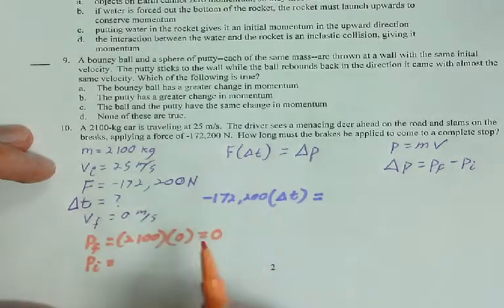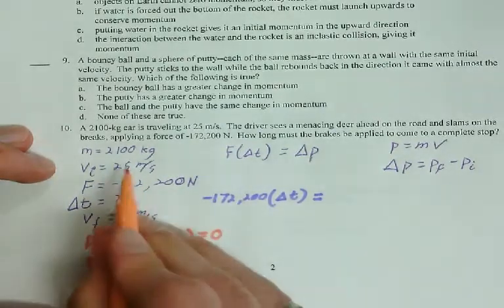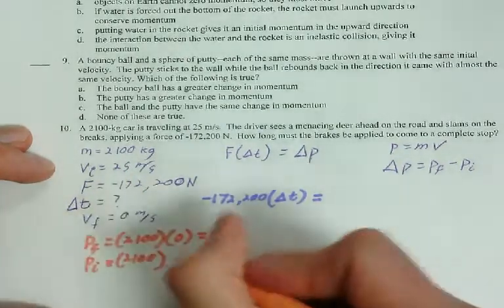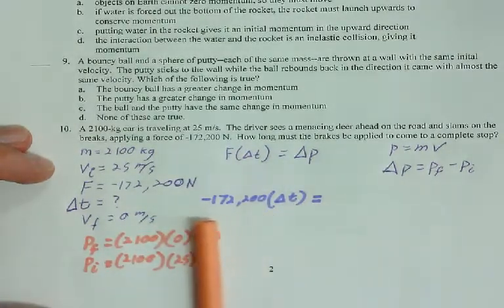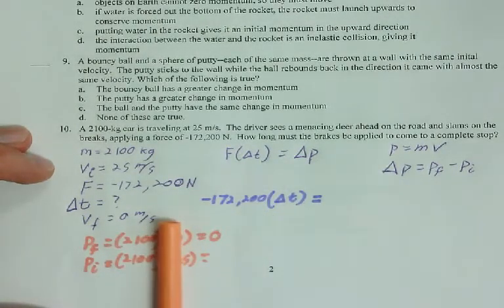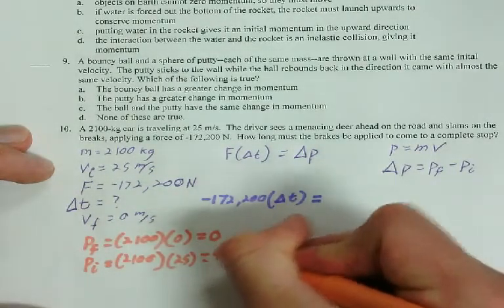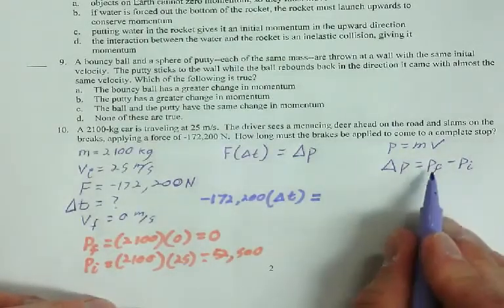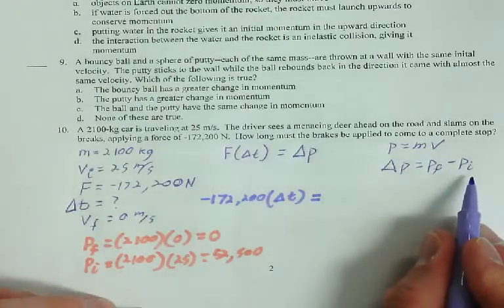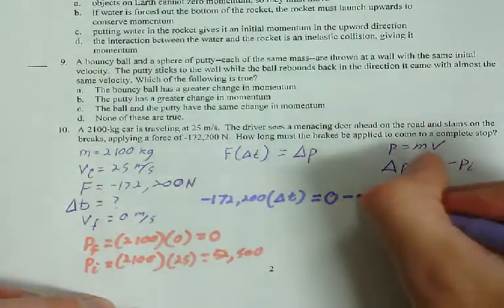Okay? PI. MV. 2100 times the velocity at the beginning, which is 25. So, 2,100 times 25. 52,500. Okay? So, it's final minus initial. So, it's zero minus 52,500.